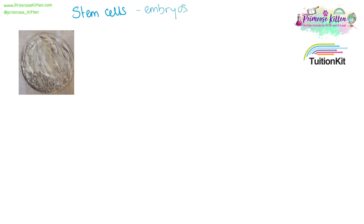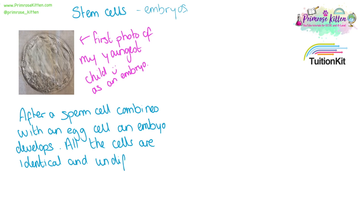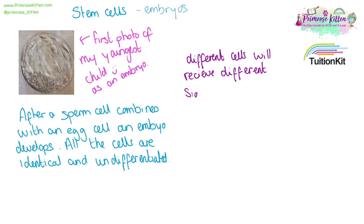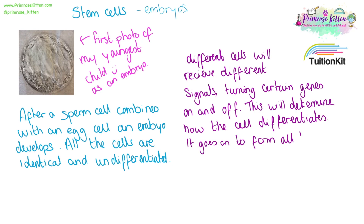We all start off looking the same. This is the very first photo that I have of my youngest child, just before he was an embryo. Technically, he's a five-day blastocyst at this point, but this is what he looked like. After a sperm cell combines with an egg cell, an embryo develops. All of the cells in this are identical and undifferentiated. Different cells will receive different signals, turning certain genes on and off, which will determine how the cell differentiates. An embryo goes on to form all of the different cells, tissues, and organs within a body.